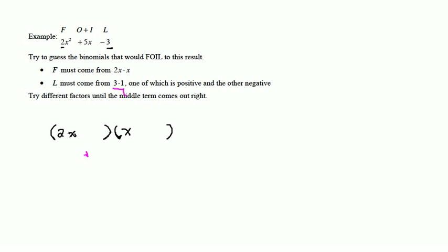So what we can do is just start trying out some combinations down here and do a quick outer plus inner to see if we get the right middle term. If I were to put plus 3 as the second term in the first factor and minus 1 as the second term in the second factor, my outer product would be 2x times negative 1, which is negative 2x, and my inner product would be x times 3, which is plus 3x.